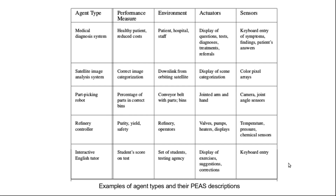Here we can see more different types of agents. For example, it lists an agent which performs medical diagnosis, an agent which analyzes satellite images, another agent which picks up parts from the conveyor belt, then a refinery controller, and an interactive English tutor. The PEAS description is given for each of these agents.